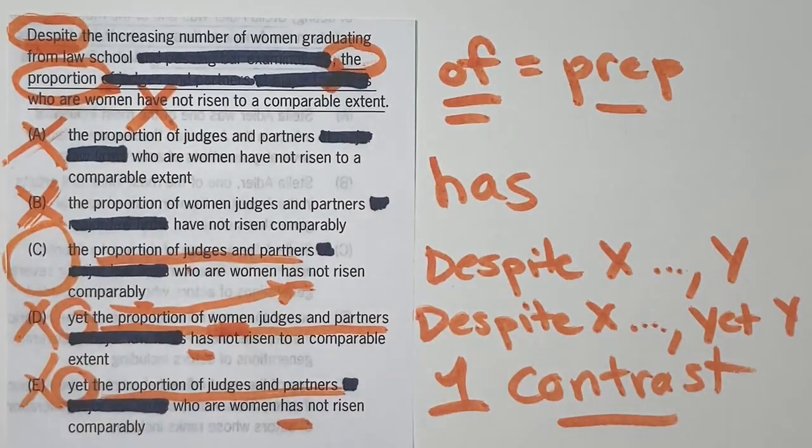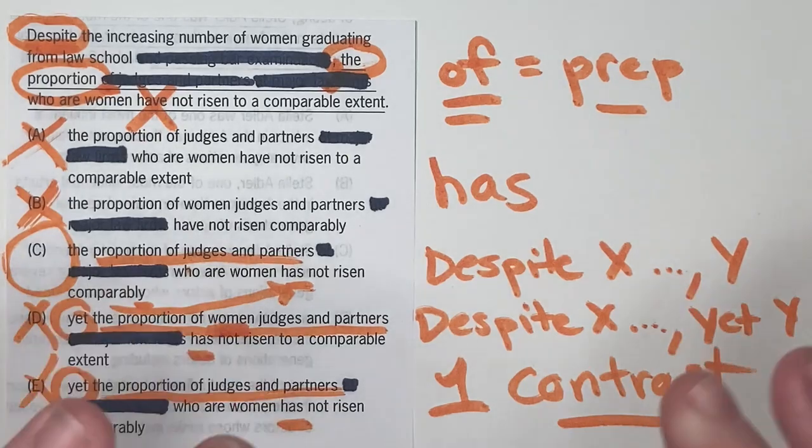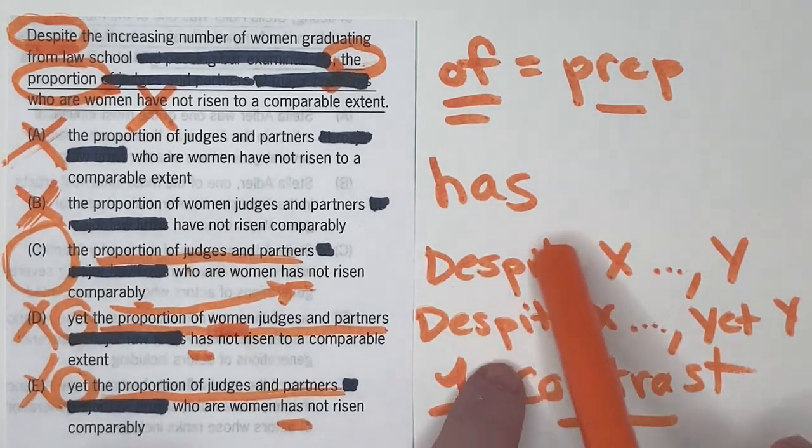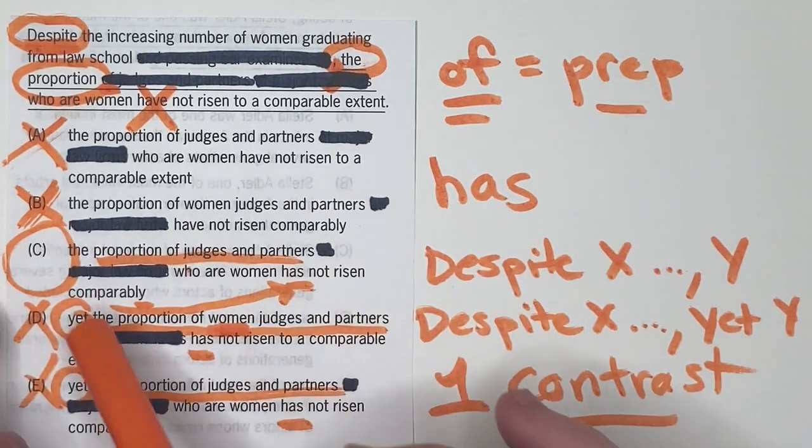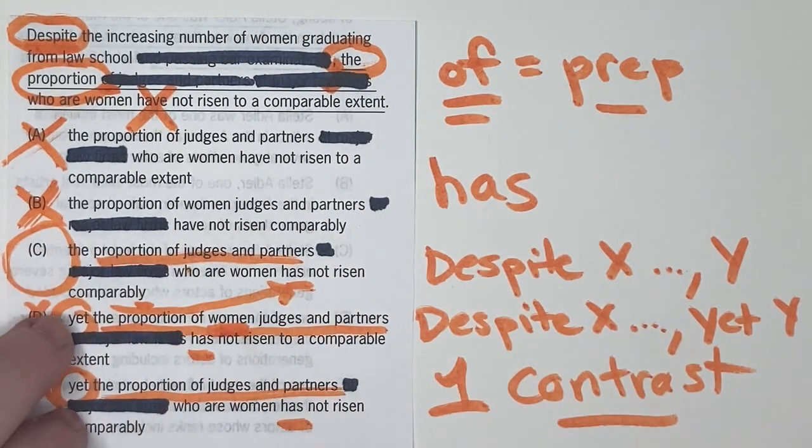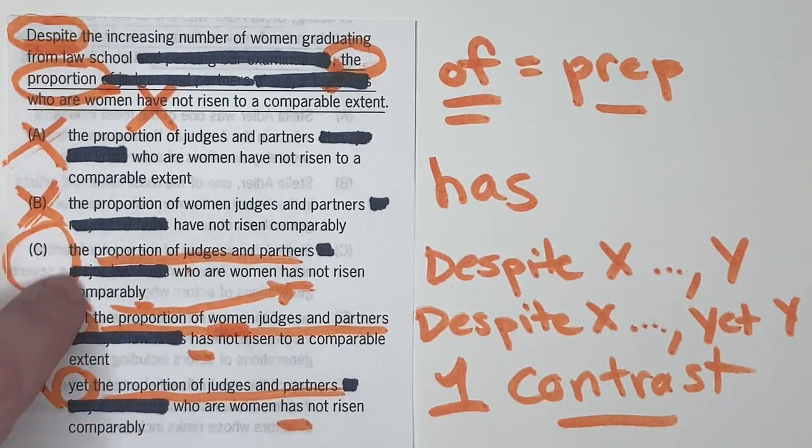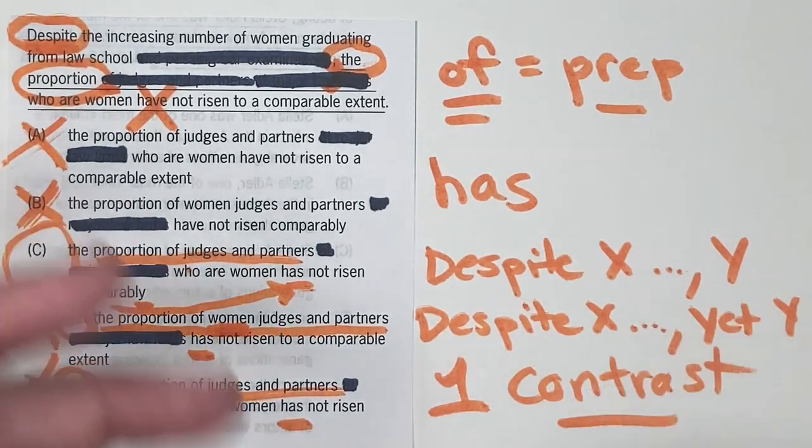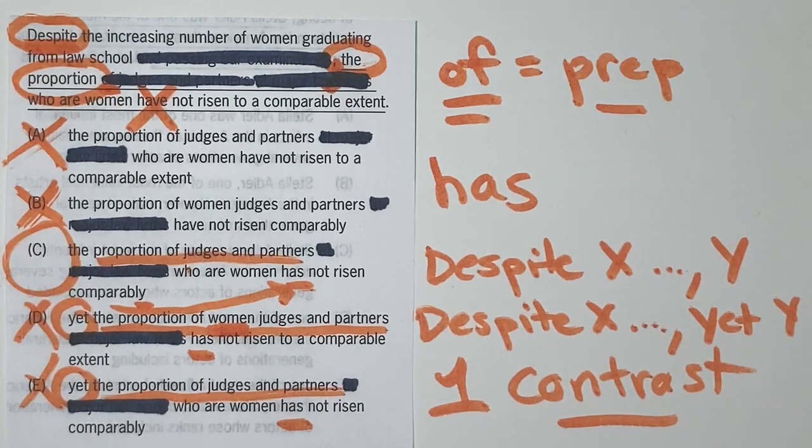So therefore C is our correct answer. And again, what this is testing is relatively straightforward subject verb agreement. That's why I said it was easy, but less straightforward, this kind of interesting style difference where you have D and E being redundant with sort of the double contrasting keywords that's unnecessary and C being just leaner. It's saying the same thing with less words and the GMAT always, always values concision.